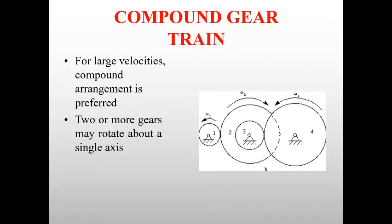Second is compound gear train. For large velocity changes, compound arrangement is preferred. Two or more gears may rotate about a single axis. The first gear rotates the next, which is a compound gear — where two gears, gear two and gear three, are on the same shaft. Gear one rotates gear two; since it is a compound gear, gear two and three rotate at the same speed. Gear three is connected to gear four and will rotate it.